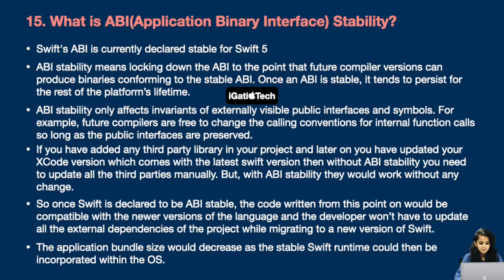Next question, the last of this video: what is ABI — Application Binary Interface — stability? Swift is now ABI stable as of Swift 5. ABI stability means locking down the ABI to the point that future compiler versions can produce binaries conforming to the stable ABI. Once an ABI is stable, it tends to persist for the rest of the platform's lifetime. ABI stability only affects invariants of externally visible public interfaces and symbols. Future compilers are free to change calling conventions for internal functions, so long as the public interfaces are preserved.